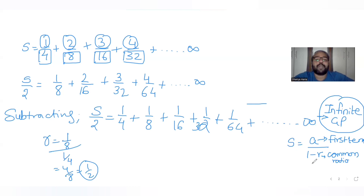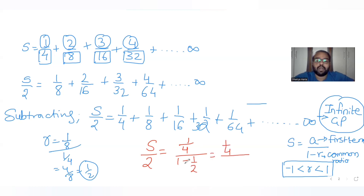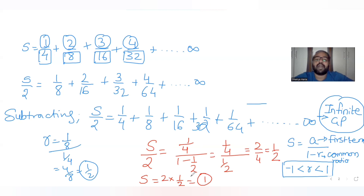This formula is valid when r is between -1 and 1. Here r equals 1/2, which satisfies that condition. So S/2 equals a divided by (1 minus r), which is (1/4) divided by (1 minus 1/2), giving (1/4) divided by (1/2), which equals 2/4 equals 1/2. Therefore S equals 2 times 1/2, which gives S equals 1.